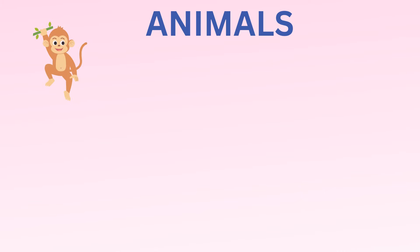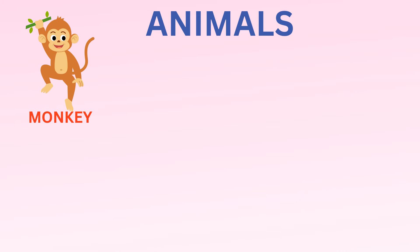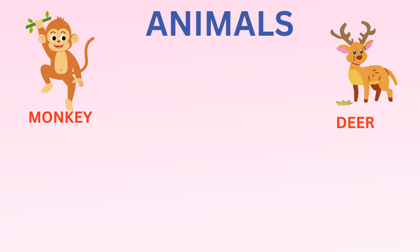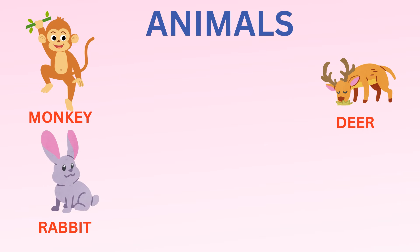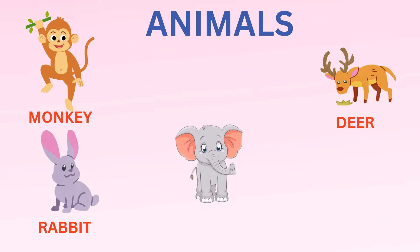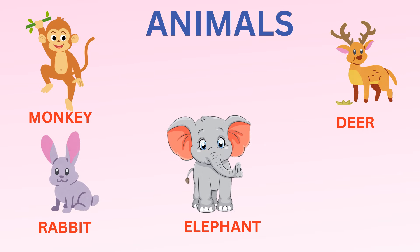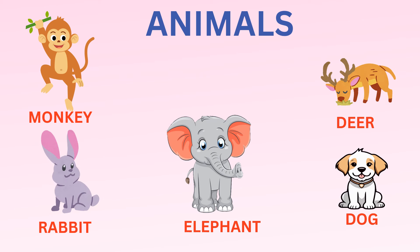Let's see some examples of names of animals. Monkey. Deer. Rabbit. Elephant. Dog.